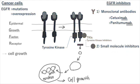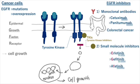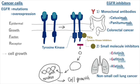Question: Please list three main tyrosine kinase inhibitors. Monoclonal antibody drugs targeting EGFR are employed in colorectal cancer treatment, while tyrosine kinase inhibitors are utilized for non-small cell lung cancer.